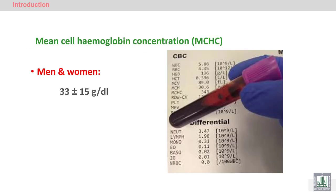The mean cell hemoglobin concentration (MCHC) represents the hemoglobin inside the packed cell volume. If we take blood and centrifuge it, we can note the packed cell volume or hematocrit, then calculate the hemoglobin in relation to the hematocrit to get the MCHC. The MCH and MCHC are similar to each other and both are used for detecting the hemoglobinization of red blood cells.